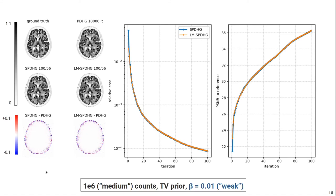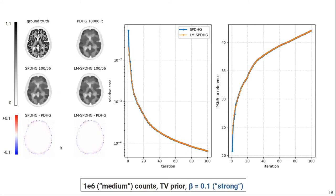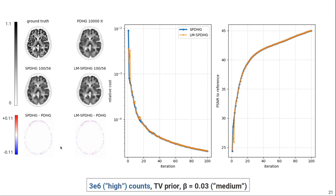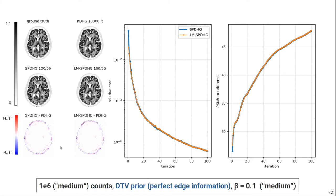This is also true if you use a weaker prior. Of course the images are a bit more noisy, but they're still very similar between the sinogram and list-mode version. And they are of course very similar to the reference solution. It's also true if you use a stronger prior. It's also true if you use three times less counts or three times more counts. And it's also true for different priors, so for directional total variation, which is an anatomical prior. So that all in all shows that the convergence of list-mode SPDHG seems to be the same as the convergence of the sinogram SPDHG.